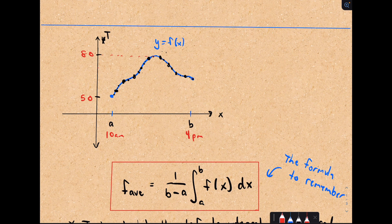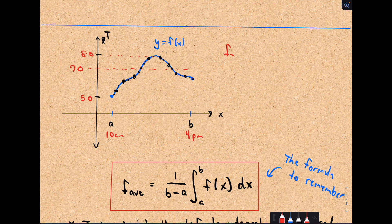The idea is we can compute the average value using this formula. Suppose we get the average value is 70 degrees. It's as if the average temperature is 70 degrees. There has to be at least one time between 10 a.m. and 4 p.m. that equals 70 degrees.